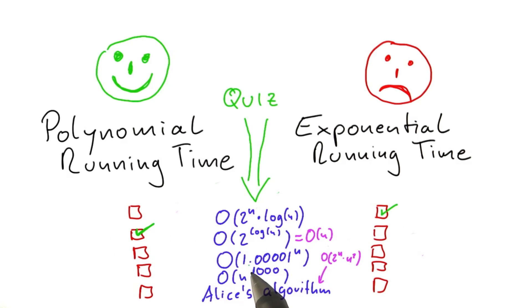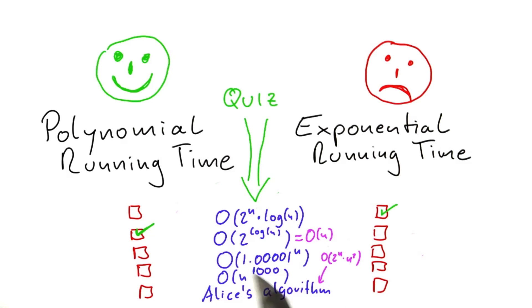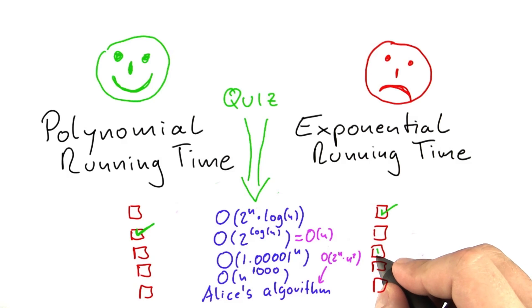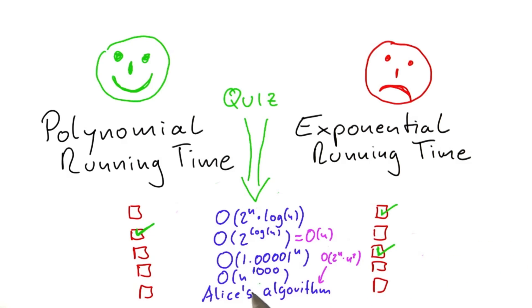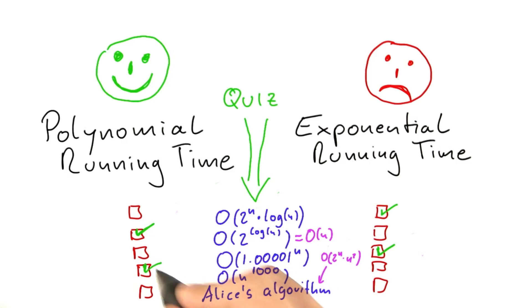Now O of 1.00001 to the power of n — that is going to be a very, very slowly growing function, but nevertheless it's exponential. So this is the correct answer. And n to the power of 1000, that's basically the opposite. It's a polynomial that will grow extremely fast and you would never want an algorithm with that running time, but nevertheless it is a polynomial running time.